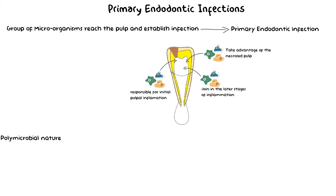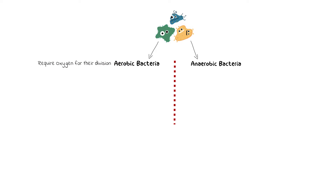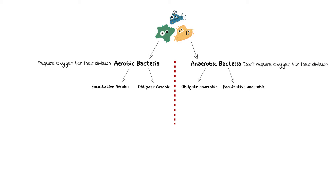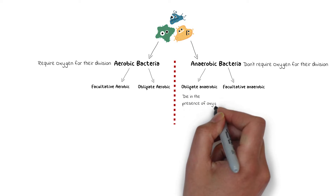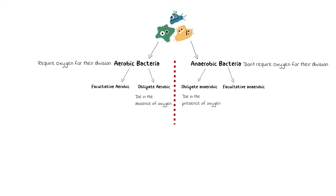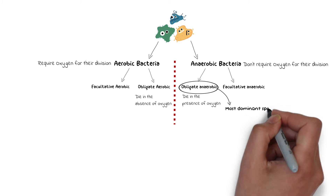Among this diverse group of bacteria, obligate anaerobic bacteria appear to be quite dominant. There are two main groups of bacteria classified according to oxygen need: aerobic bacteria that require oxygen for their division, and anaerobic bacteria that do not require oxygen. Subdivisions include obligate anaerobic bacteria that die in the presence of oxygen, and obligate aerobic bacteria that die in the absence of oxygen. There are other subdivisions such as facultative bacteria, but obligate anaerobic bacteria appear to be the most common bacteria in the primary endodontic infection.